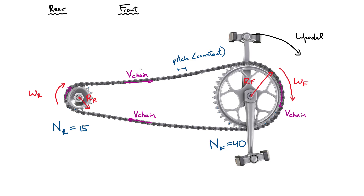Here's a zoomed-in picture of what's going on. I've counted the number of teeth in the front sprocket versus the rear: 40 teeth in the front and 15 in the back. Now one thing to remember about this chain is that the distance between the pins is what we call the pitch. For this chain it's clearly going to be a constant value. So how would we express that? We can get a relationship between that pitch and the total circumference relative to the number of teeth. I'm going to call that pitch distance little d.